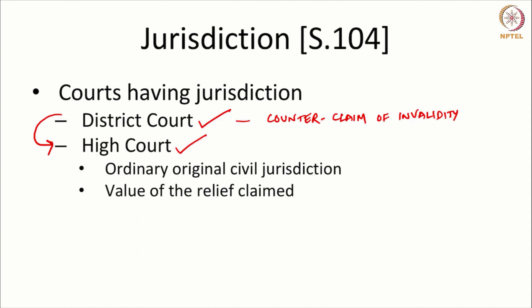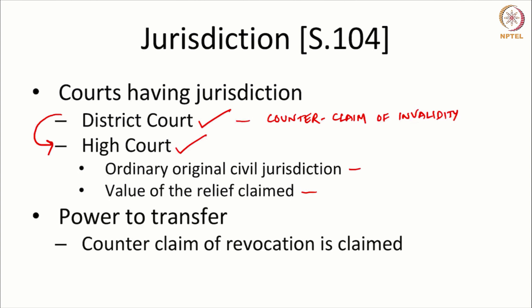When a case is filed, the first reaction of the defendant will be to say he is not infringing and also to state that the patent being enforced against him is invalid. The courts having jurisdiction are determined by ordinary original civil jurisdiction, and the value of the relief can also determine which court has jurisdiction. The courts have the power to transfer the case — a district court can transfer the case when a counter claim of revocation or invalidity is raised.